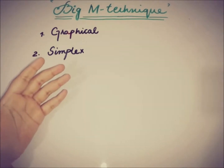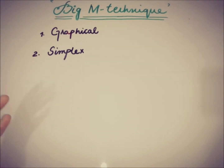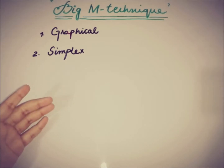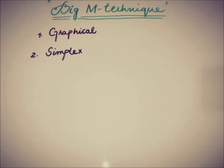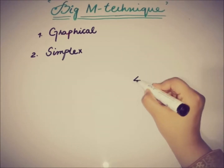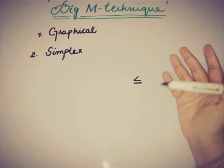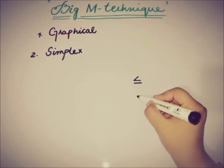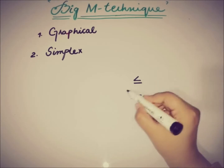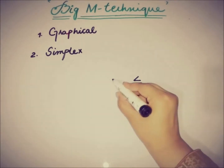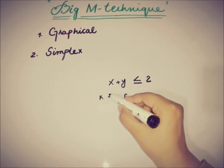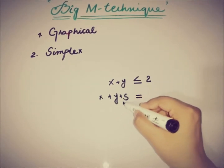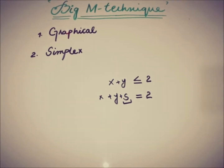The graphical method is for problems with no more than two variables. When the variables exceed two, we use the simplex method. In the simplex method, the constraints are of the type less than or equal to, and after adding a slack variable to write in standard form — for example, x plus y less than or equal to 2 becomes x plus y plus s equals 2 — we are ready to proceed with the simplex method.